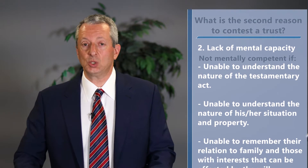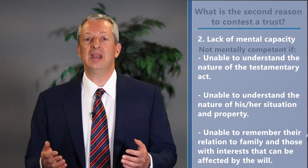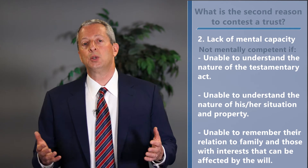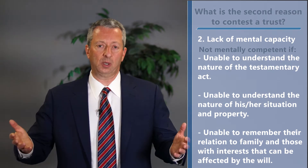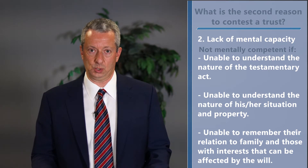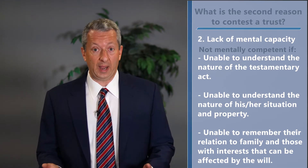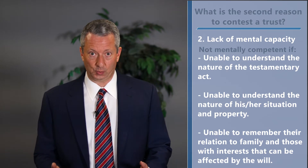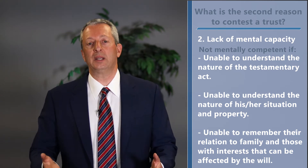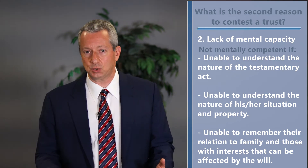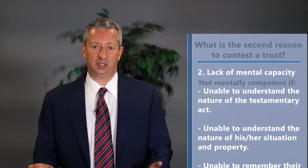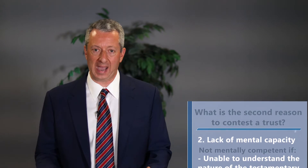The third prong is whether they understand the nature of their relationships to various people, including children, grandchildren, and spouses. If a person is unaware that they have children or doesn't understand that they are married, and creates a trust that doesn't reflect these relationships in any way, that's also good proof that they lack testamentary capacity — in other words, they lack the mental capacity to create a trust.